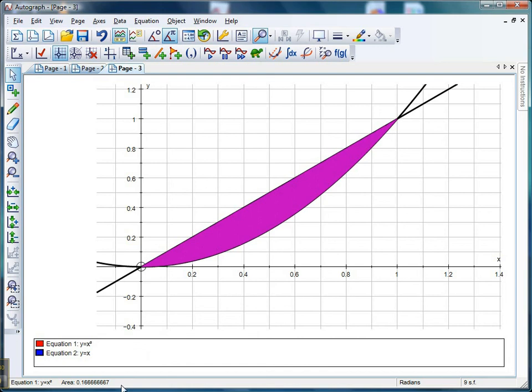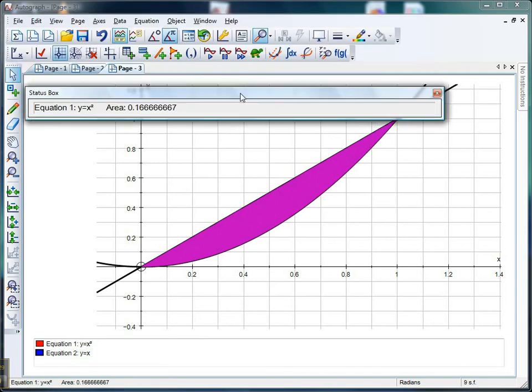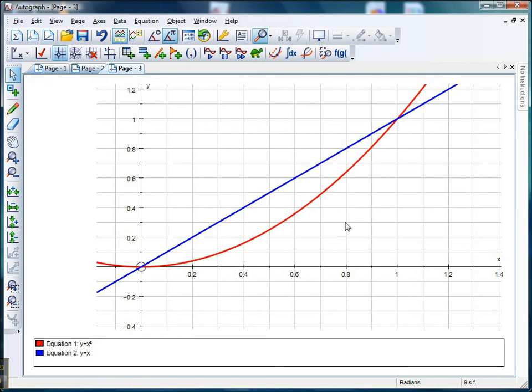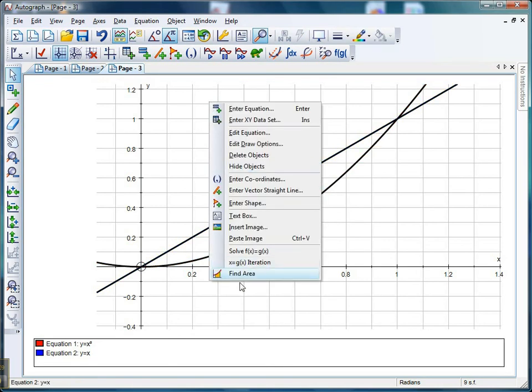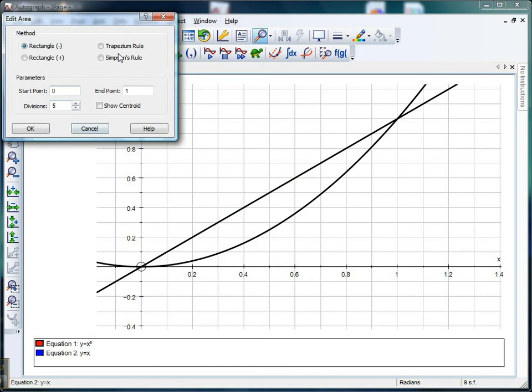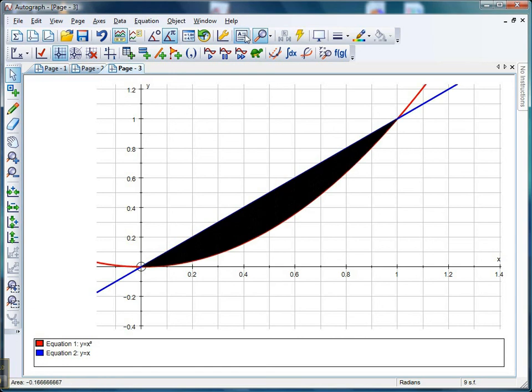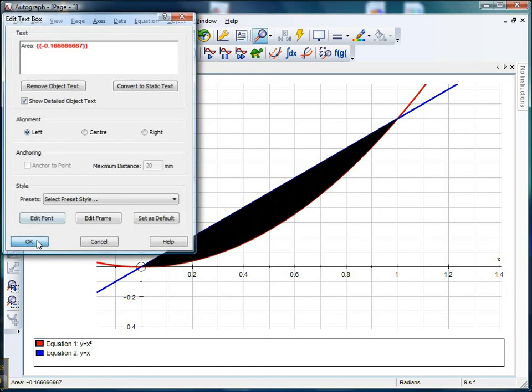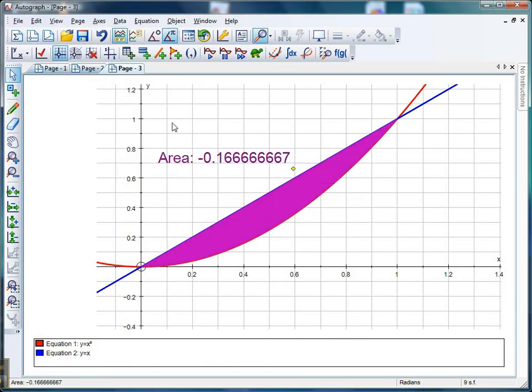If I want to see what it is, double click on that. The only thing you've got to be careful of is the order that you select. If I did the curve first and then the line, right click, find area, Simpson's rule, 200, and click OK, then what I'm actually going to get this time is a negative area. So just be careful of the order.